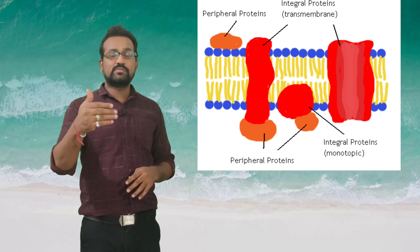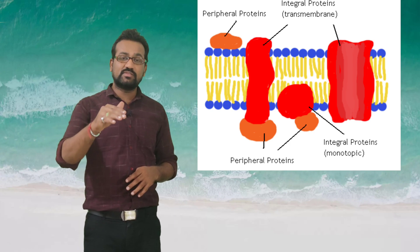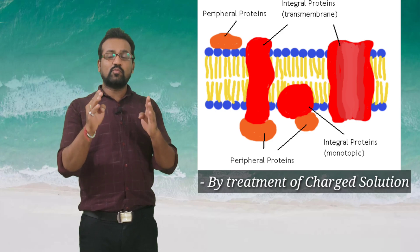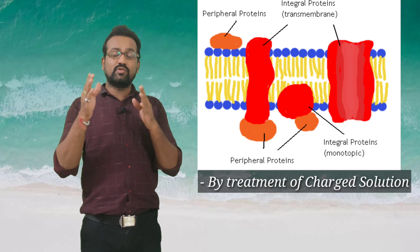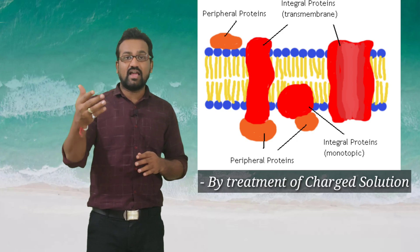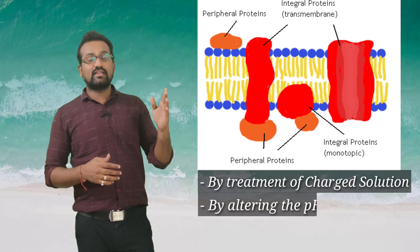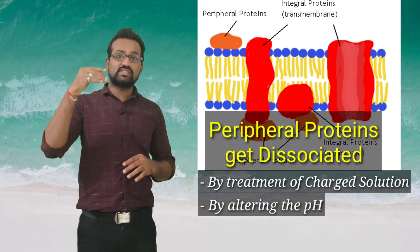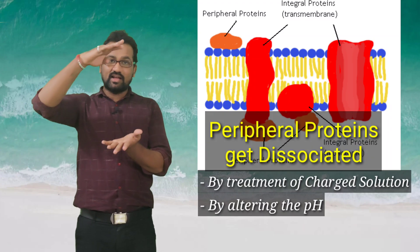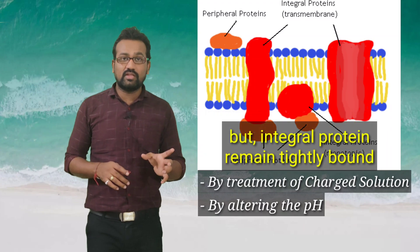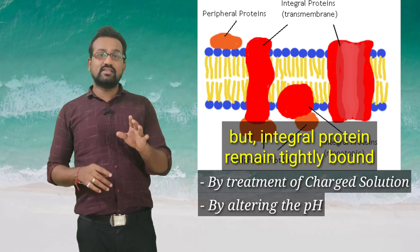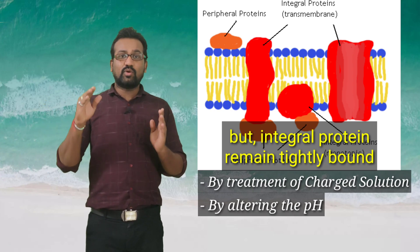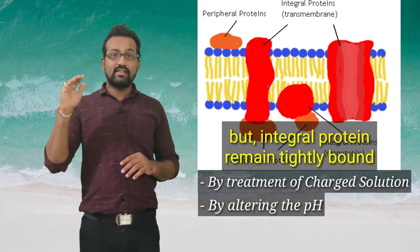If you want to study these proteins, treat the membrane with chemicals containing charge, various ions, or alter the pH of the solution. You will find that peripheral proteins dissociate very easily because they are present at the outer surface of the membrane. But integral proteins do not dissociate so easily because they are tightly bound within the membrane due to the polar and nonpolar regions of both the protein and the membrane.